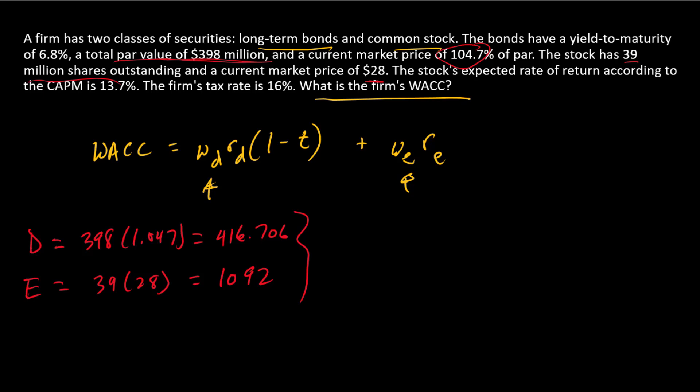So we'll use those to calculate WD and WE. So WD is market value of the debt divided by total market value of the firm. That's 0.2762.